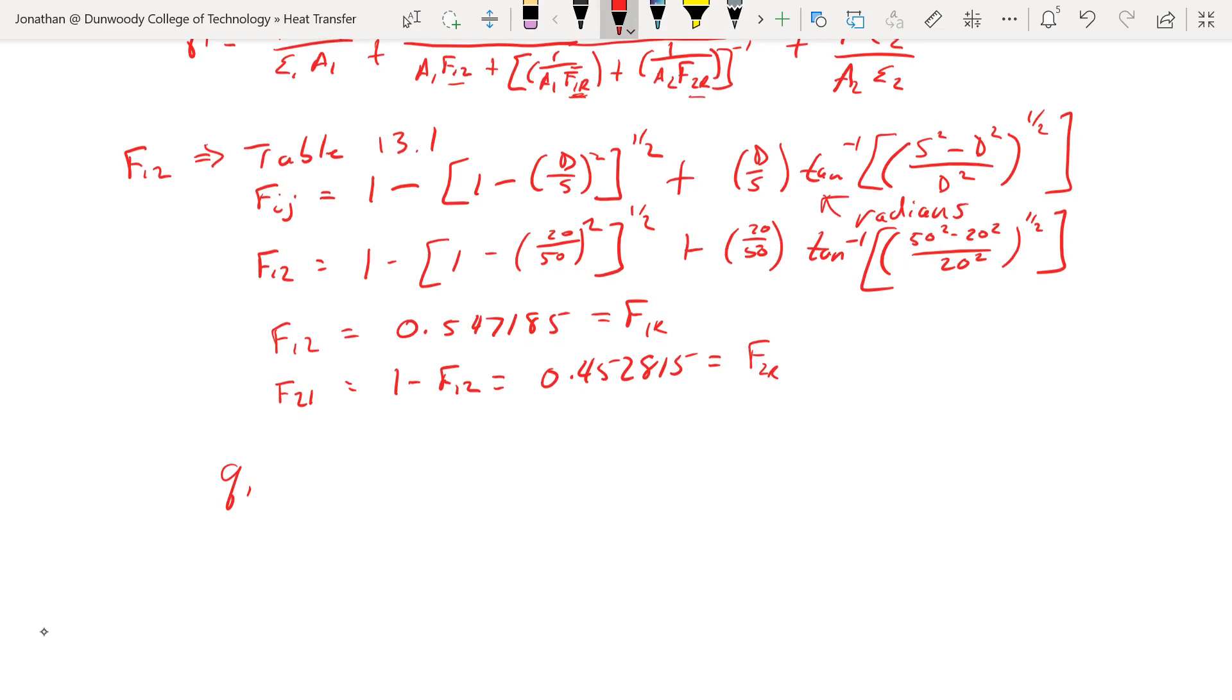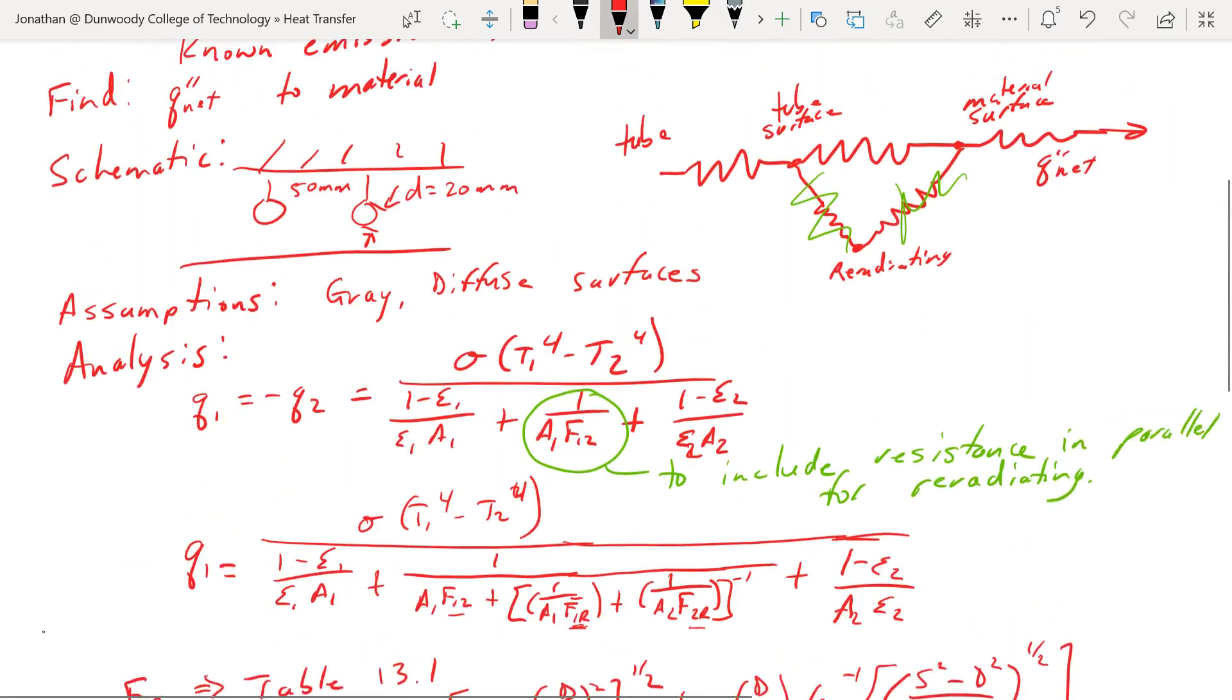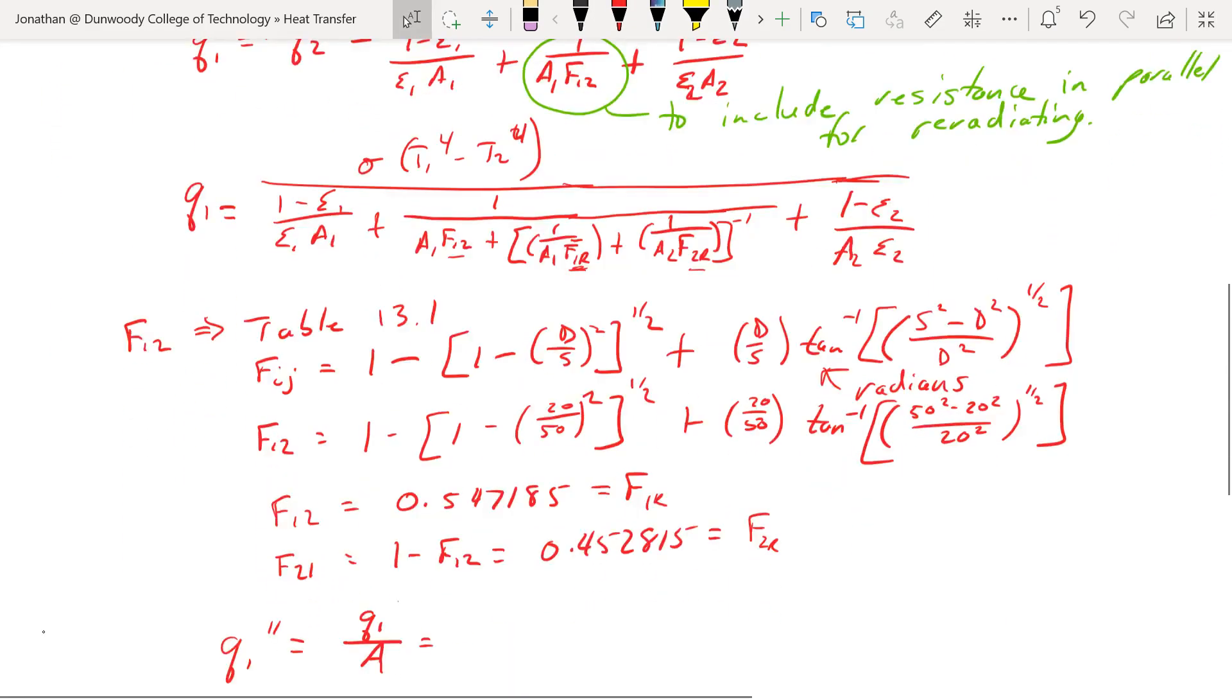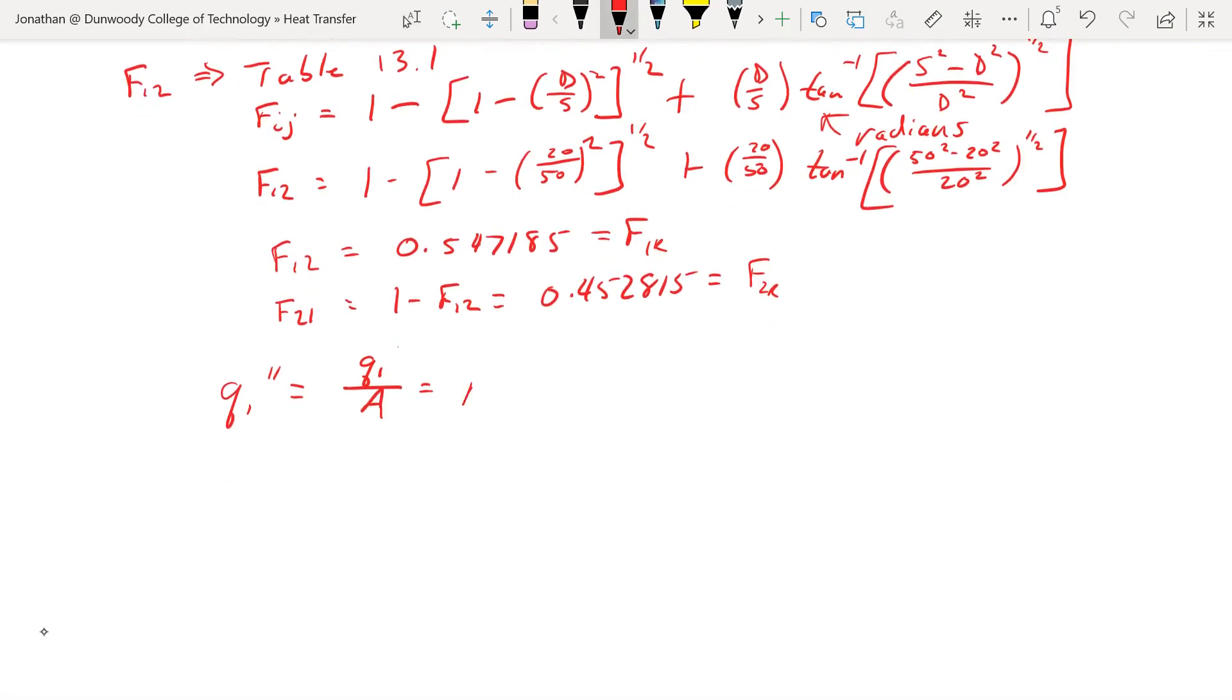But we also want to find Q1, the flux. So Q1 over area is going to be that. What's the area that we're going to use? Well, we're just going to take a little chunk of this area and take this segment here. So it's area 1, let me call that area of the material.